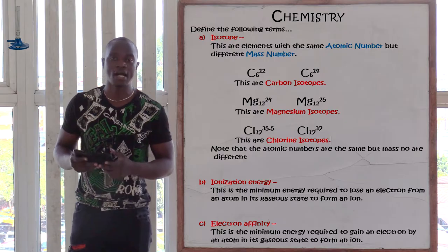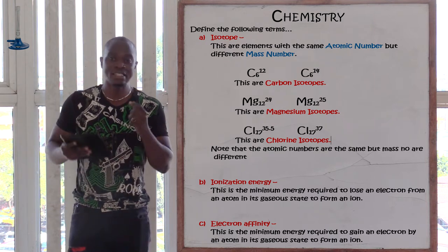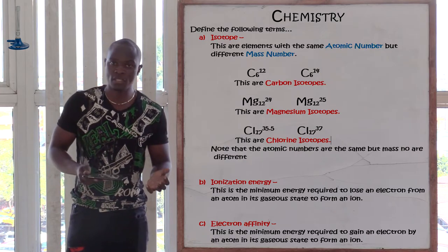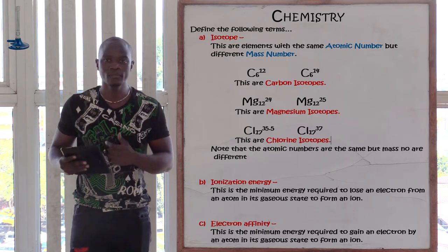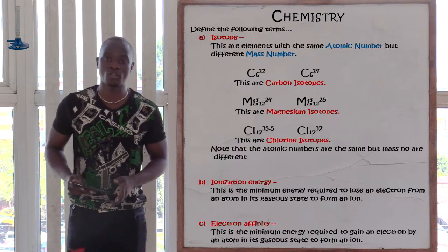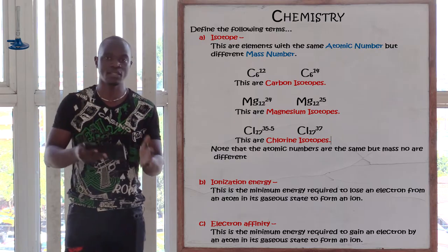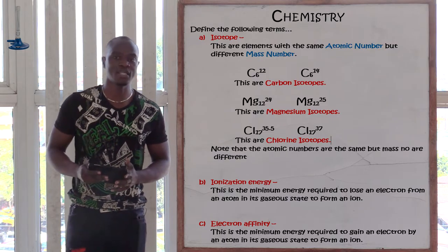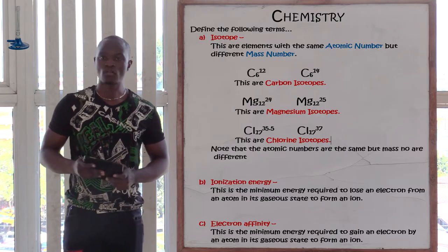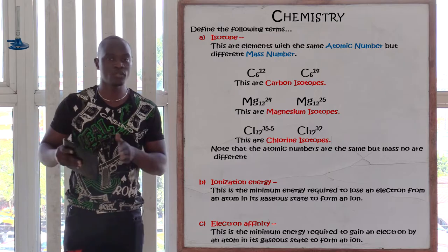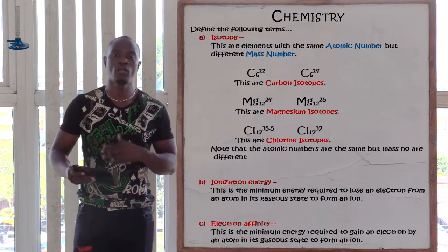The next definition is electron affinity. Electron affinity is directly opposite to ionization energy. Ionization energy is the energy required to lose electrons. Electron affinity is the minimum energy required to gain electrons into the outermost energy level of an element in its gaseous state. In ionization we lose; in electron affinity we gain electrons. Mostly we talk about electron affinity for non-metals gaining electrons, and ionization energy for metals losing electrons.